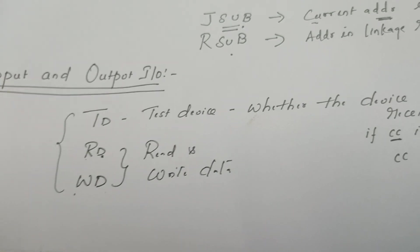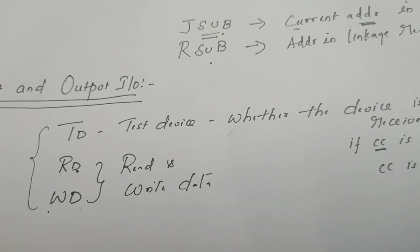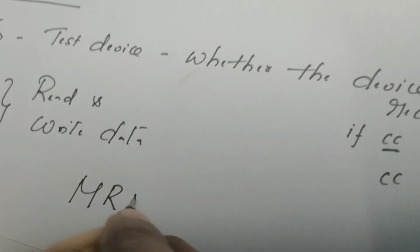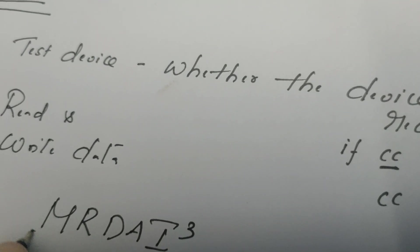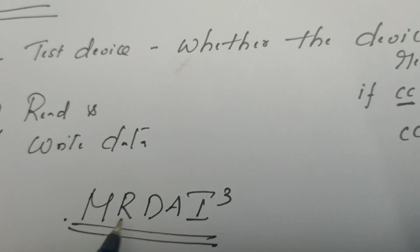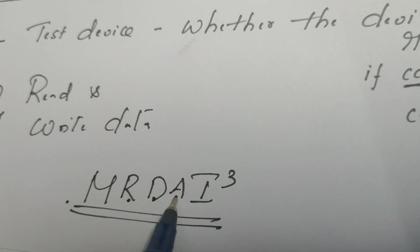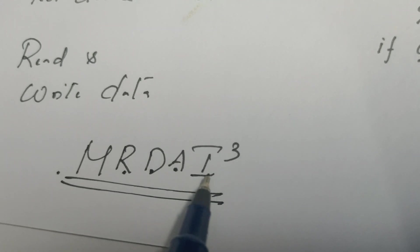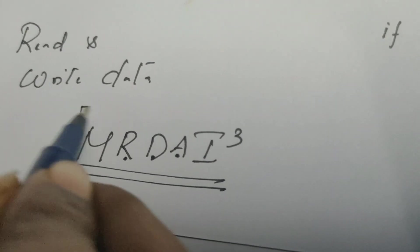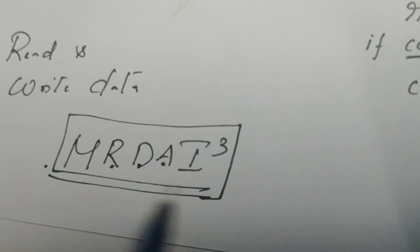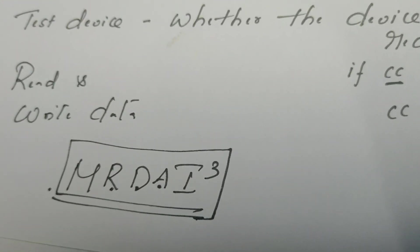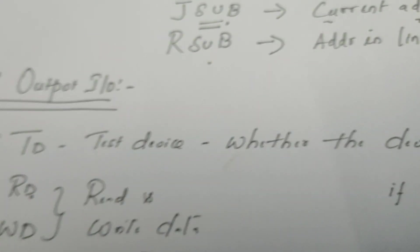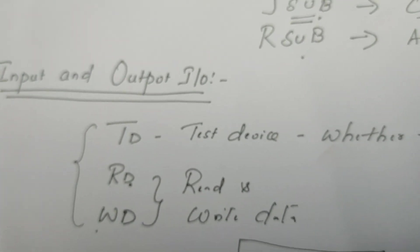We have now discussed the MRDAI-cube of SIC architecture: memory, registers, data format, addressing mode, instruction format, instruction set, and input-output operations. This gives complete clarity of SIC architecture, and the content is sufficient for reproducing answers in exams. Thank you.